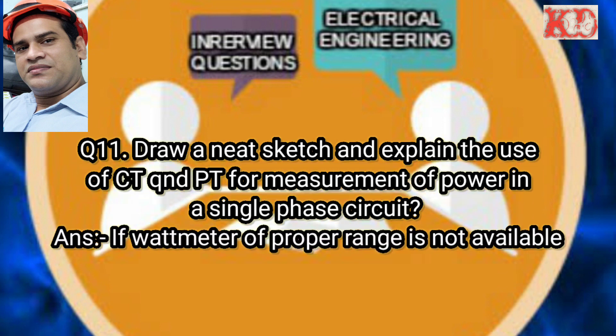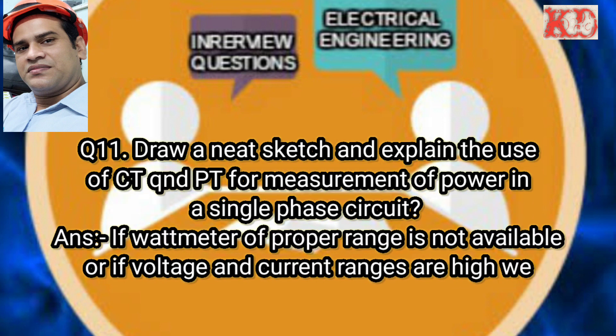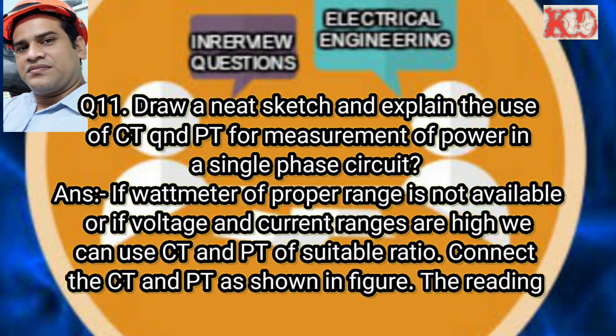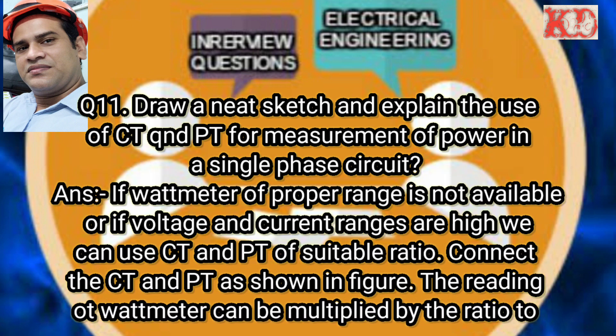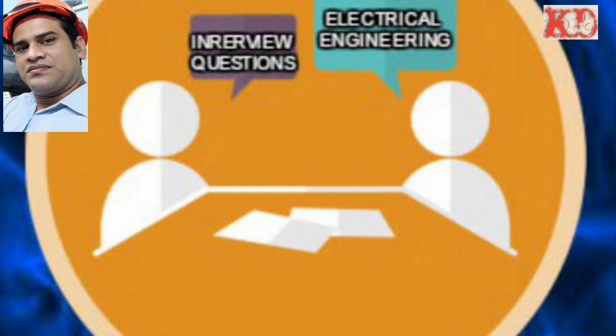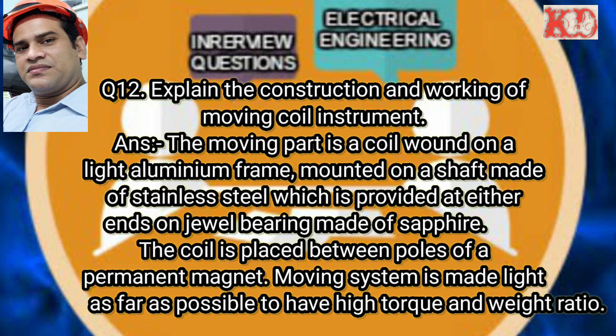Question number eleven: Draw a neat sketch and explain the use of CT and PT for measurement of power in a single-phase circuit. Answer: If a wattmeter of proper range is not available, or if voltage and current ranges are high, we can use CT and PT of suitable ratio. Connect the CT and PT accordingly; the reading of the wattmeter can then be multiplied by the ratio to get the actual power.